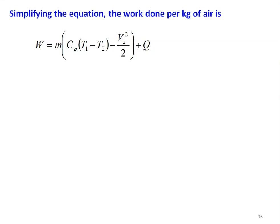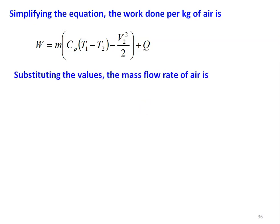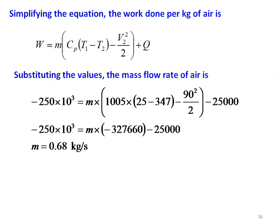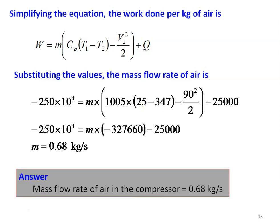Writing the general form of the steady flow energy equation and simplifying based on the data for the compressor: Z1 and Z2 values are not given, and H equals Cp into T. So the work done W equals M into Cp into (T1 minus T2) minus V2 squared by 2. V1 is also not given so that term is dropped, plus Q. Substituting the values: 25 minus 347, minus 90 squared by 2. The calculated mass flow rate of air is 0.68 kilograms per second. That is the answer: mass flow rate of air in the compressor is 0.68 kilograms per second.